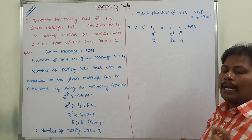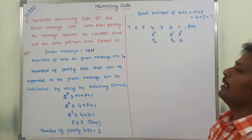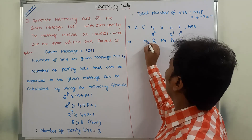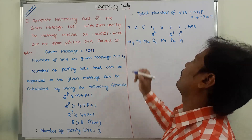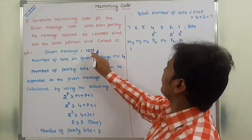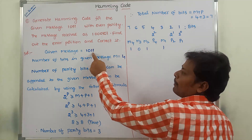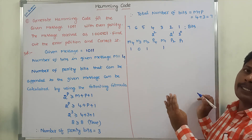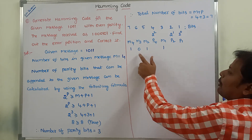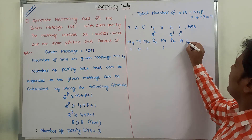Once parity bits are located at the power-of-2 positions, the remaining positions are filled with message bits: positions 3, 5, 6, 7 hold M1, M2, M3, M4. The message is 1011, indexed from right to left: M1 = 1, M2 = 1, M3 = 0, M4 = 1.